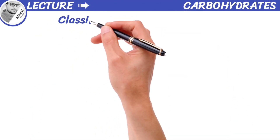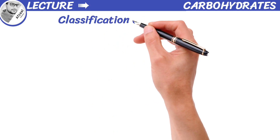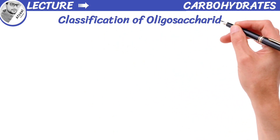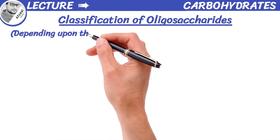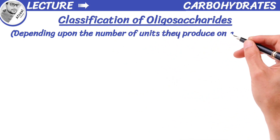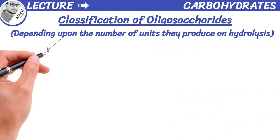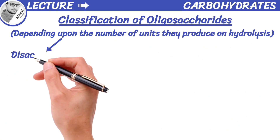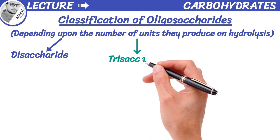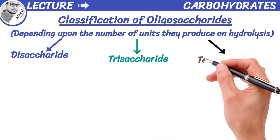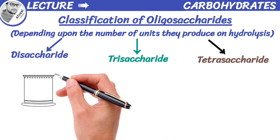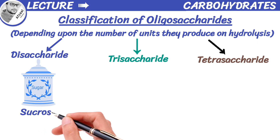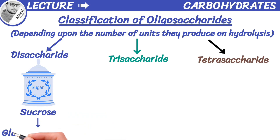Now we are going to talk about the classification of oligosaccharides, depending upon the number of units they produce on hydrolysis. They are classified as disaccharides, trisaccharides, and tetrasaccharides. A common example of a disaccharide is sucrose, known as table sugar, made up of glucose and fructose.